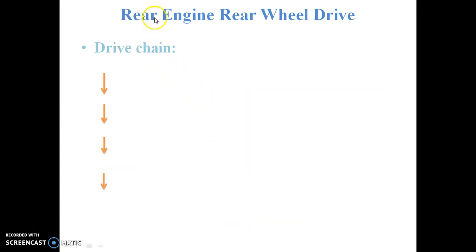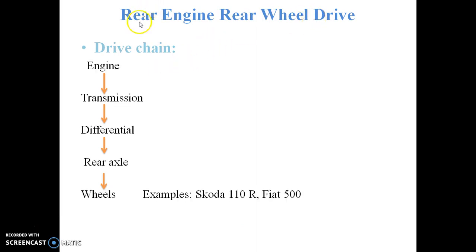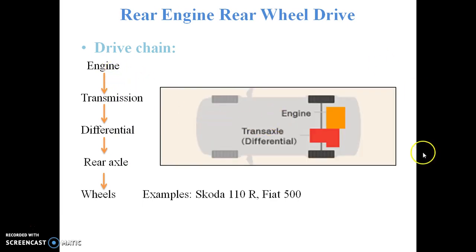The next type is the rear engine rear wheel drive. In this case, the engine is mounted at the rear and power is transmitted to the rear wheels only. The power is transmitted from the engine to the transmission, then to the differential, then to the rear axle, and then to the rear wheels. The main advantage is that there is no propeller shaft, so the design is quite simple.